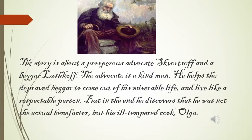When the main character, Lushkov, revealed to Sergei that it was Olga who cried and wept for him, and at the same time she chopped the wood for him so that he could earn a little money and make his life better.